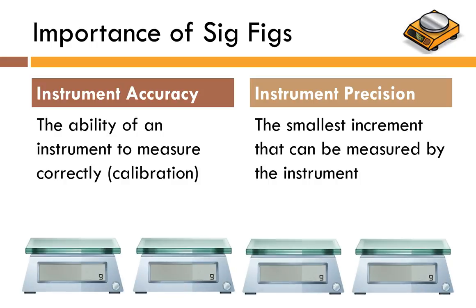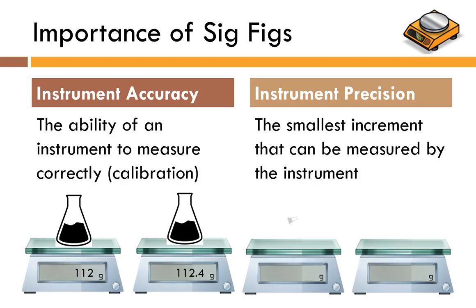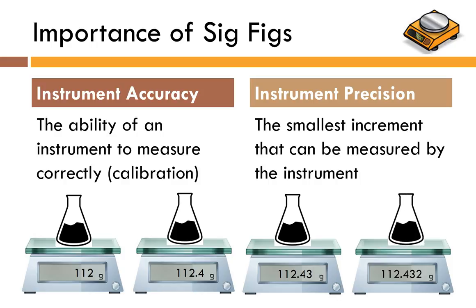Say you've got these four electronic scales. You place a sample on each and get 112 grams, 112.4 grams, 112.43 grams, and 112.432 grams. All of these instruments are at least equally accurate — we don't know if the sample actually weighs 112 grams, but all four are in agreement. Precision has to do with the smallest increment measured by the instrument: the first scale measures to the ones place, the second to the tenths place, the third to the hundredths place, and the last one to the thousandths place.